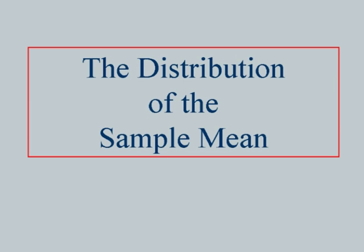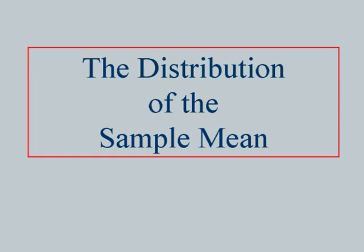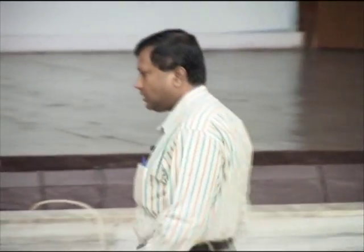To continue with our discussion, today we talk in detail about the distribution of the sample mean and why this distribution is important. This distribution would allow us to make some valid inferences about the population mean. Our objective is to infer about the population mean, but since we cannot approach each and every unit of the population, we have to resort to getting some idea about the population based on the sample mean. The probability distribution of the sample mean is therefore of significance.